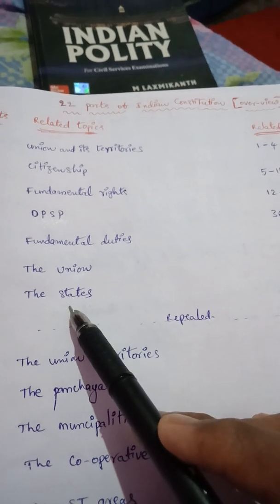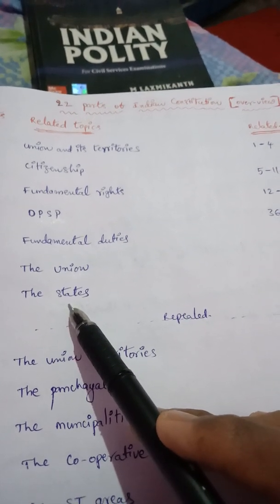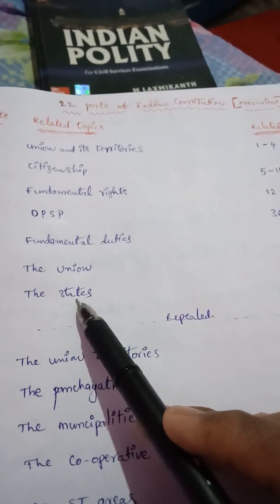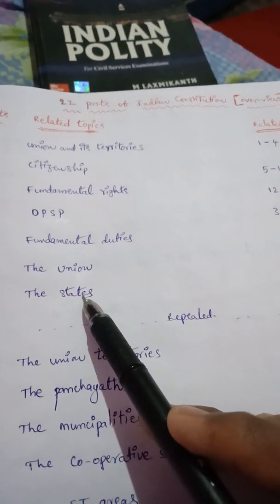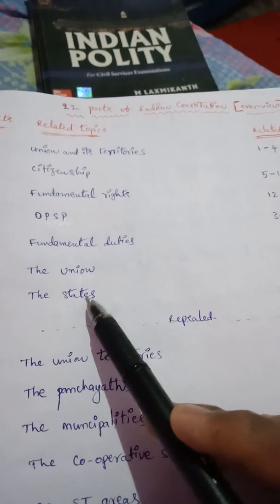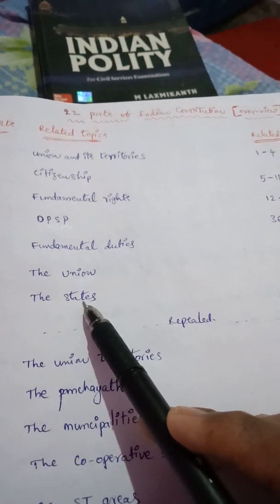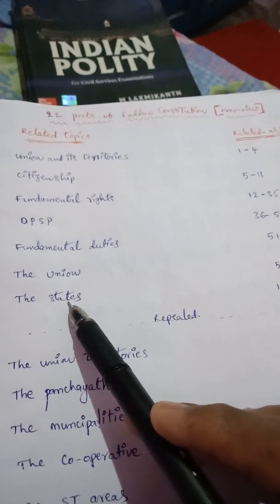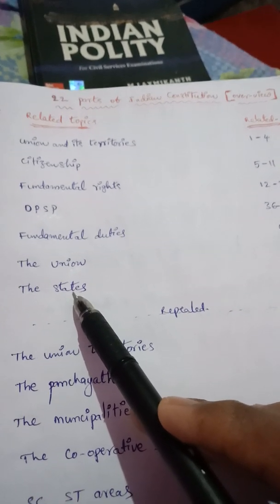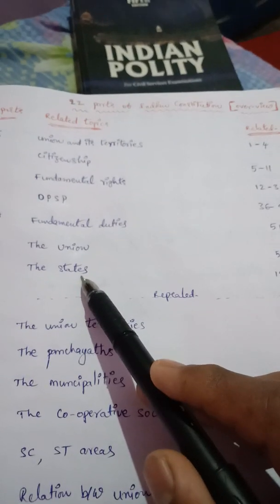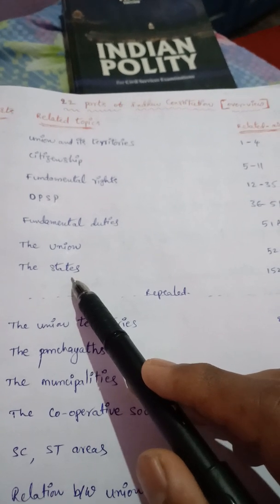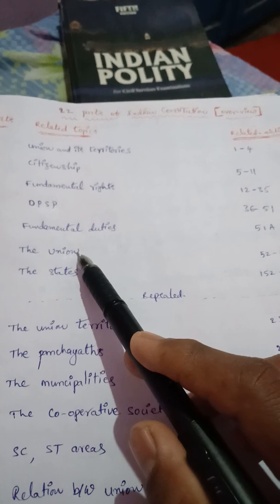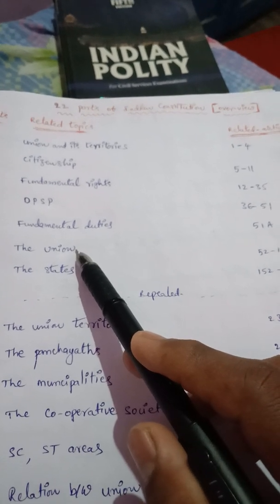Next, composition of the legislative councils as well as the assemblies in the states. Next, duration of the legislatures. Next, qualifications of MLAs and MLCs — MLA means Member of Legislative Assembly, MLC means Member of Legislative Council. Next, Governor's right to address both houses.